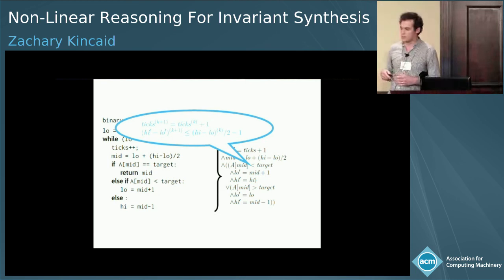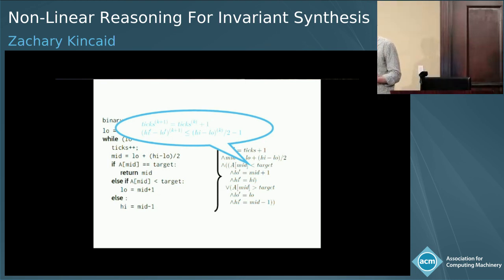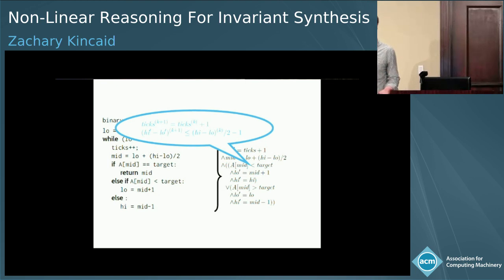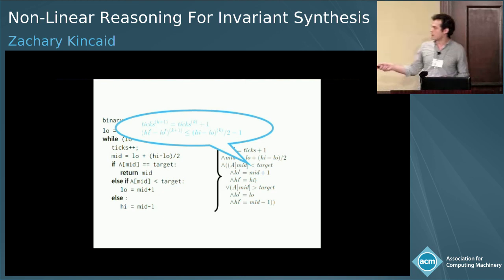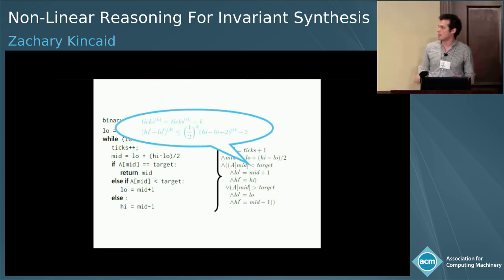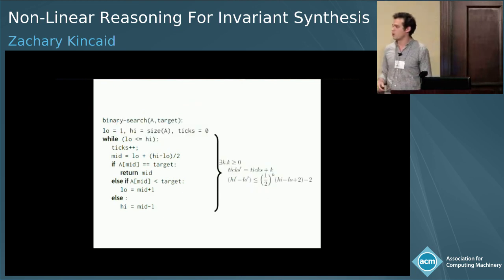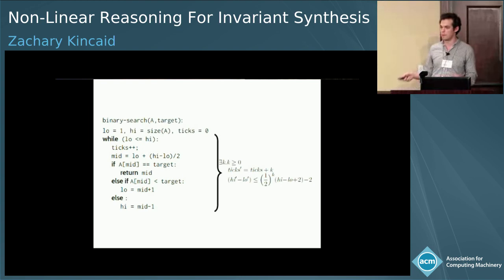Something else worth noting is that my notion of recurrence is fairly broad. I don't really mean equation — they could be inequations, and they are not necessarily recurrences on variables; they could be recurrences on terms. After extracting these recurrences, I throw them into a computer algebra system. It computes an exponential closed form, I turn that into a transition relation, and I get a log-width bound by just taking the log of both sides.